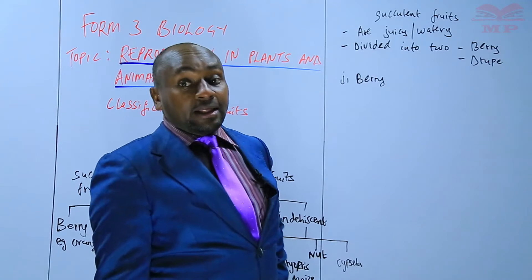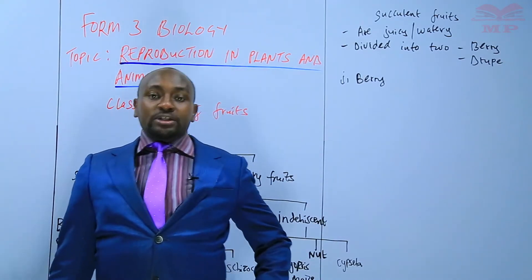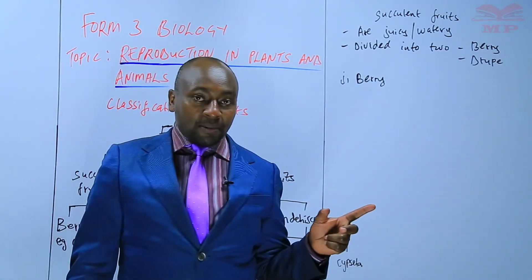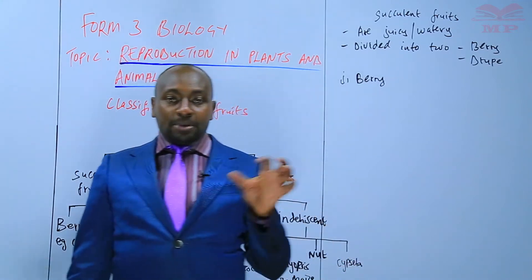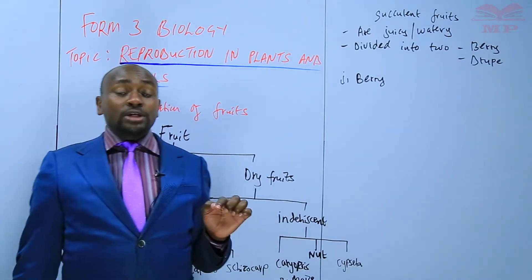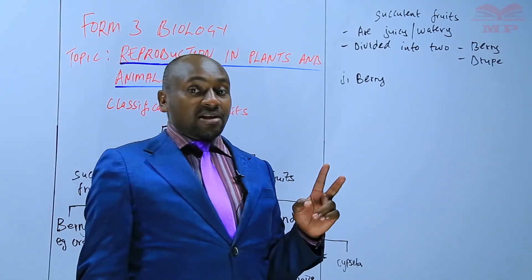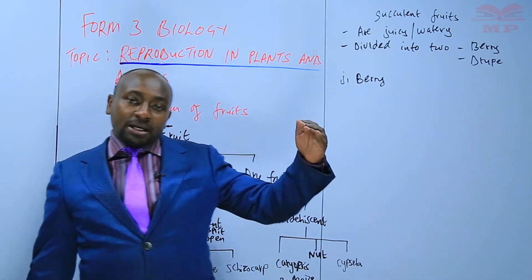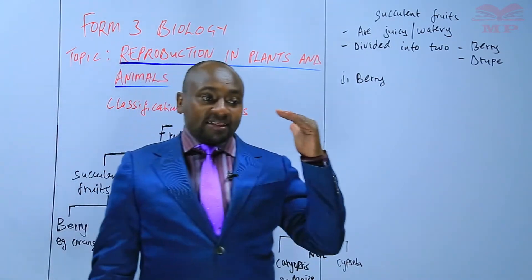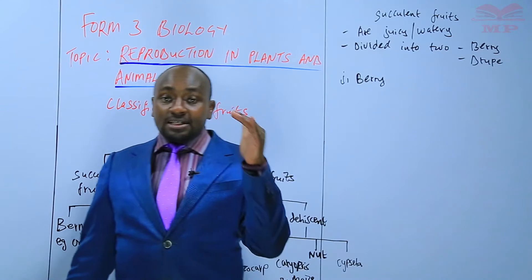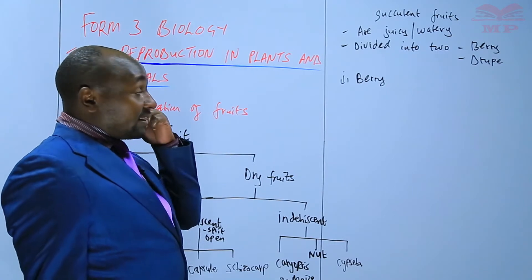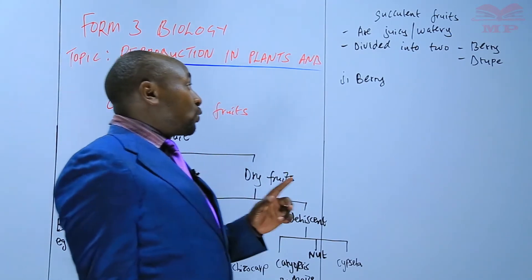Let us go back to the parts of a fruit. The fruit is mainly made up of two main parts: there is the fruit wall, which is also called the pericarp, and the seed that is inside. The pericarp is divided into three: the outer fruit wall called the epicarp or exocarp, then the middle layer called the mesocarp, and then the innermost part called the endocarp, before you get to the seed.